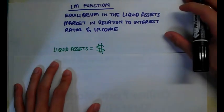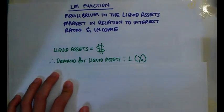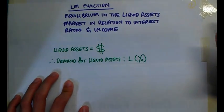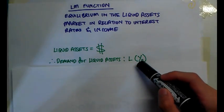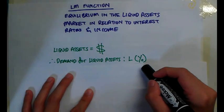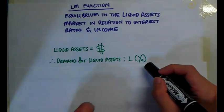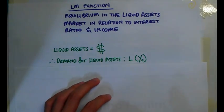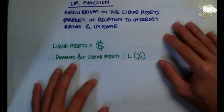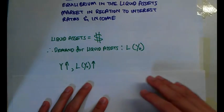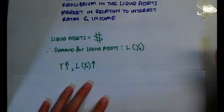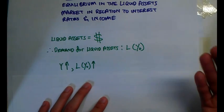Liquid assets is money, and the demand for liquid assets is a downward sloping curve, just like the demand for almost anything. It is denoted by L and bracket Y-naught. The reason for this is because Y affects the demand for liquid assets. Think about it — if your income were to be higher, would you be demanding more money? Yes. When income increases, the demand for liquid assets will increase.